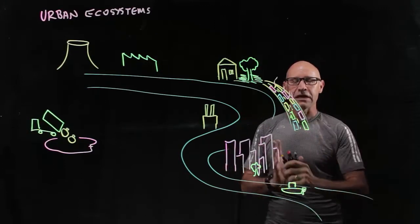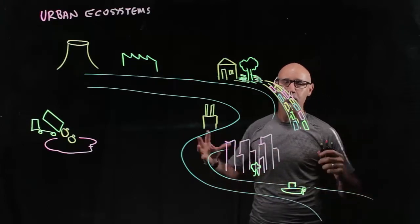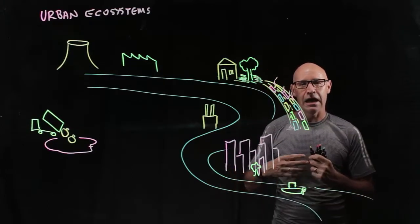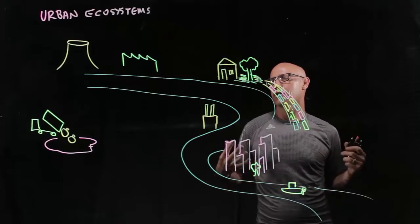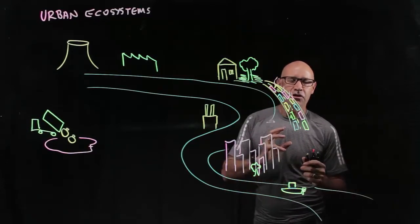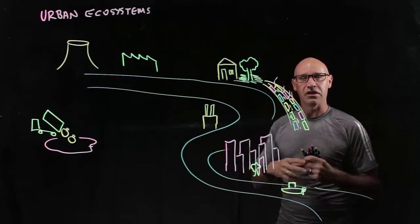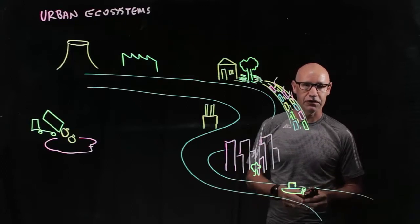And so we're now interacting with animals and plants that live also in these environments, and we produce this thing called an urban ecosystem. So in this video, I want to have a look at the human impacts on the plants and animals and the environment of an urban ecosystem.